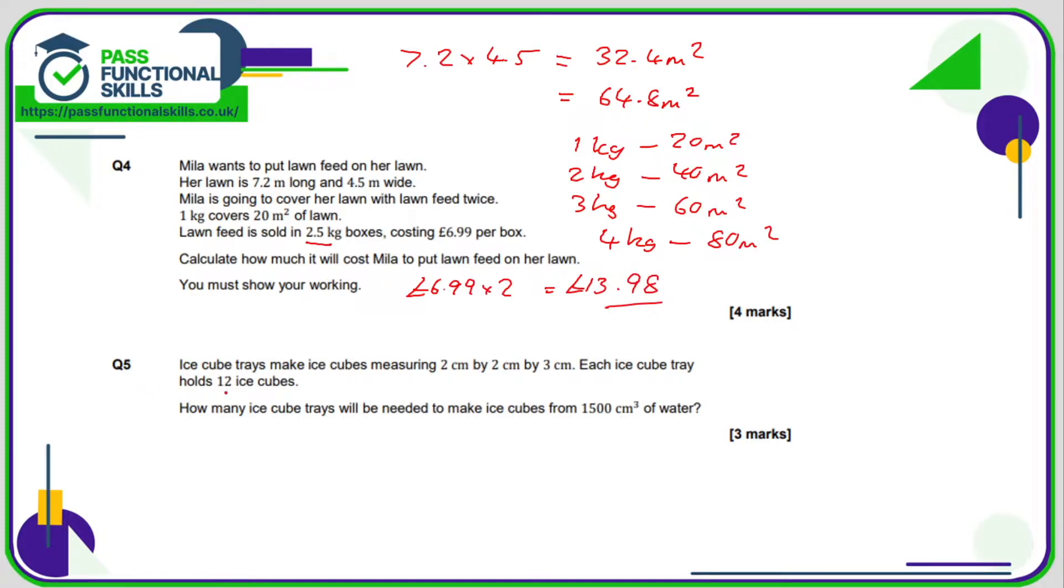Question number five: the first thing we need to do is work out the volume of one ice cube. It's 2 times 2 times 3—12 cubic centimeters per cube. Now in one tray, we know that the one tray holds 12 ice cubes. So if we multiply this by 12, then one tray is 144 cubic centimeters of water.